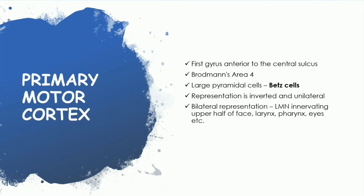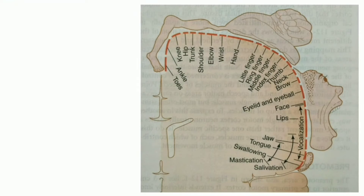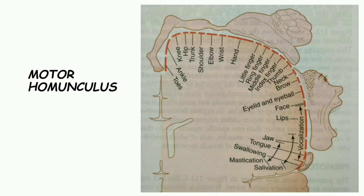This is the primary motor cortex — the pre-central gyrus, Brodmann's area 4. The whole human body is topographically represented in the pre-central gyrus. This topographic representation of the human body in the motor cortex is what we call the motor homunculus. The lower part of the body is represented medially, while as we move more laterally, the upper parts of the body are represented — this is why we say the body is represented in an inverted manner. Different parts have different-sized representations.